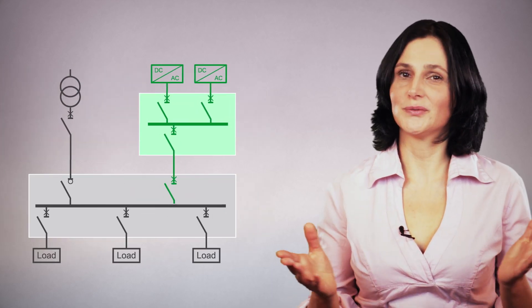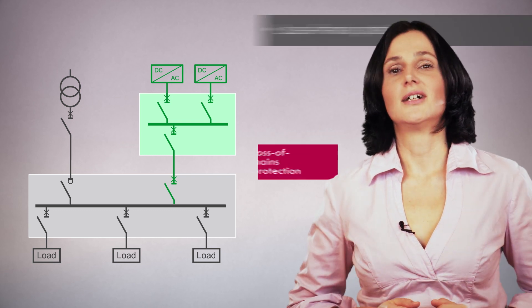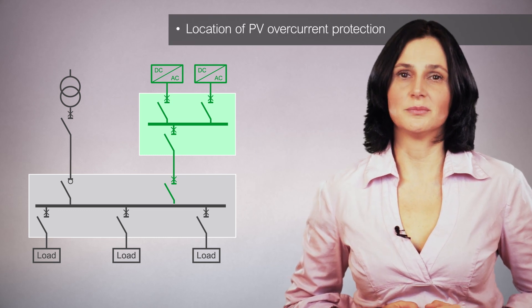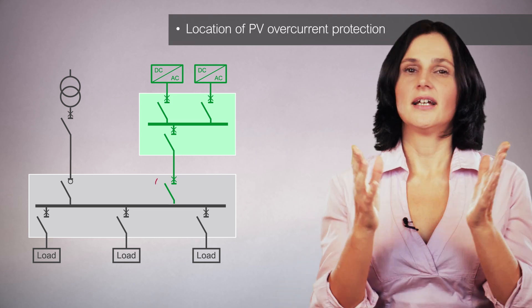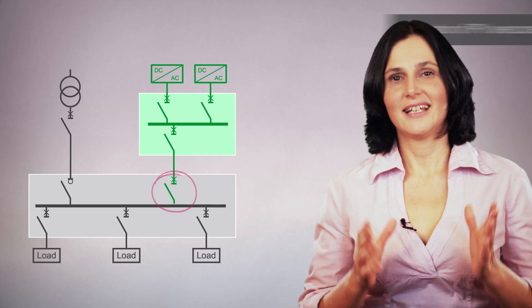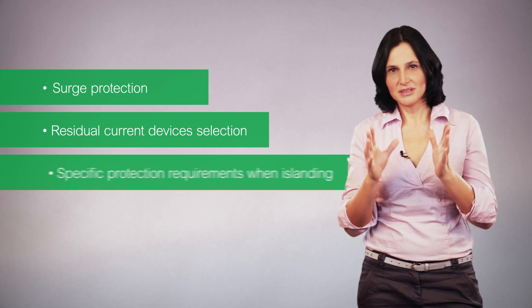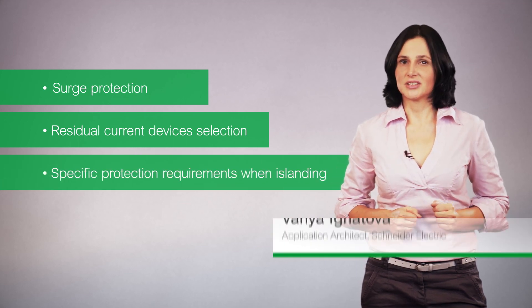To sum up, certain specific safety measures are required on the AC side of installations with photovoltaic production, including loss of mains protection, overcurrent protection for the photovoltaic power supply system which must be located on the building bus bar side, and AC isolation and switching for the photovoltaic system. In our next videos, I will cover additional protection measures such as surge protection, residual current device selection, or specific protection requirements for installations operating both grid-connected and off-grid.